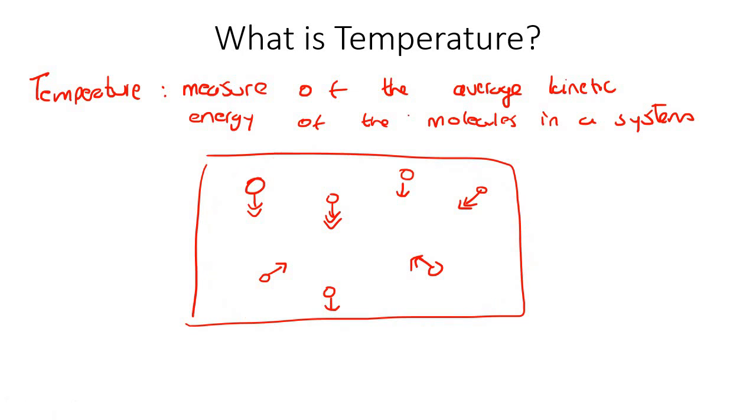So we can't say kinetic energy. We have to say average, because what we do is we can work out the average of all of those speeds, or all of those kinetic energies, and that is what temperature actually is. So remember, kinetic energy is energy due to how fast something is moving. And so that is what temperature is.